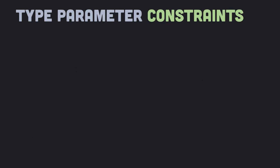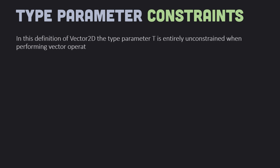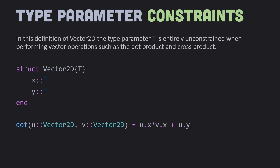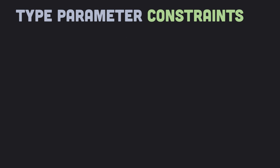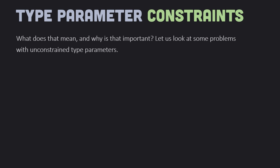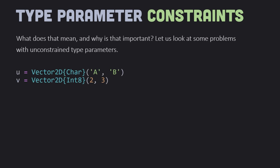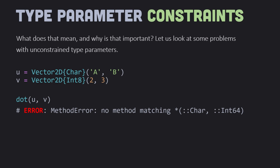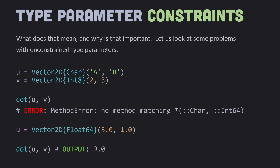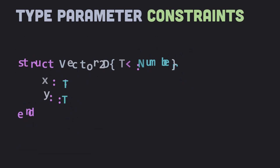In the Vector2D type we defined with type parameter T, T is entirely unconstrained when performing vector operations such as the dot product and cross product. Consider Vector2D u of type Character and Vector2D v of type Int. The dot product of the two vectors will return an error: method error, no method matching. We were able to create a 2D vector of characters, which really should not be possible. That we did something wrong is not caught until we try to run dot(u, v), and even then the problem is caught late. When something goes wrong, it's much easier to fix if we catch the problem at the source. Hence we want Julia to raise an exception when an attempt is made to create a 2D vector of characters.